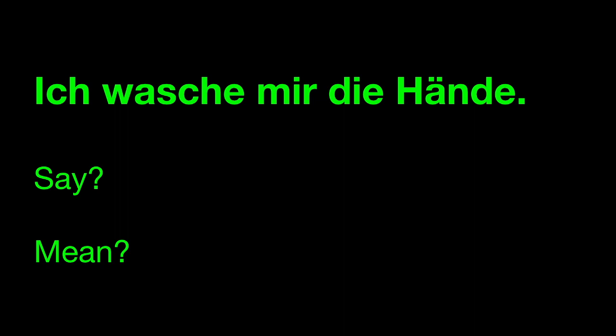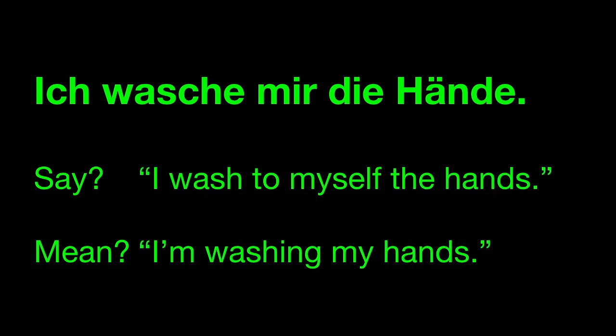You can figure this one out. Ich wasche mir die Hände. I wash to myself the hands. Notice that your body parts are never your own — it's not that I'm washing my hands, I'm washing the hands. Ich wasche mir die Hände. The mir lets me know whose hands I'm washing, because if it's just 'the hands' it could be his hands or her hands. But ich wasche mir die Hände — I wash to myself the hands — which means simply I'm washing my hands.